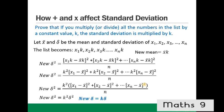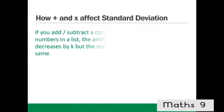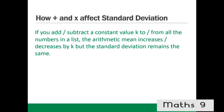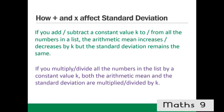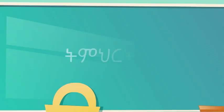The same works for dividing — dividing by k is the same as multiplying by 1/k. To summarise: adding or subtracting k increases or decreases the mean by k but leaves the standard deviation unchanged. Multiplying or dividing by k multiplies or divides both the mean and the standard deviation by k.